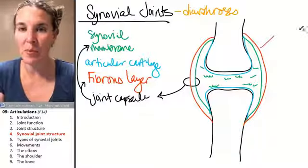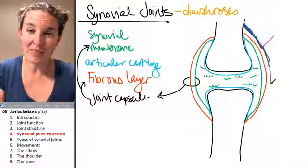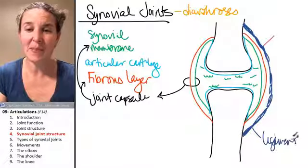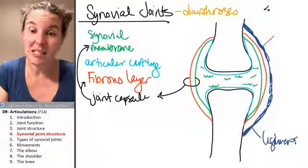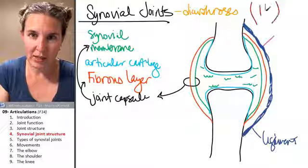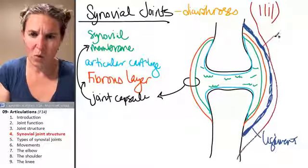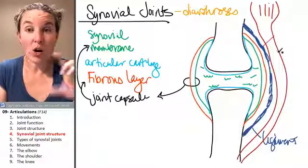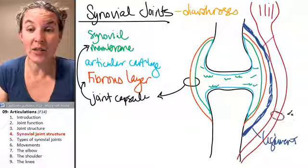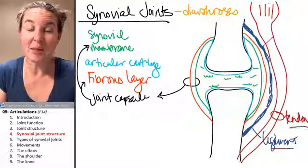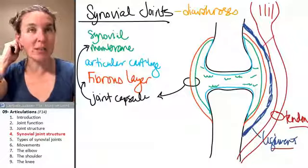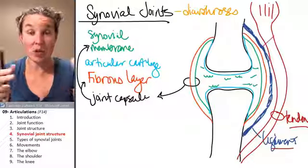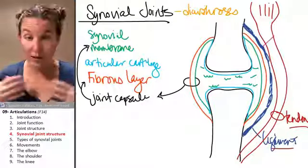Sometimes you end up with ligaments that connect the two bones and help stabilize the synovial joint. You can also have tendons — sometimes a muscle is attached to the bone crossing a joint in such a way that it actually stabilizes the joint. For example, in the shoulder, certain muscles are positioned specifically to stabilize the very unstable shoulder joint.